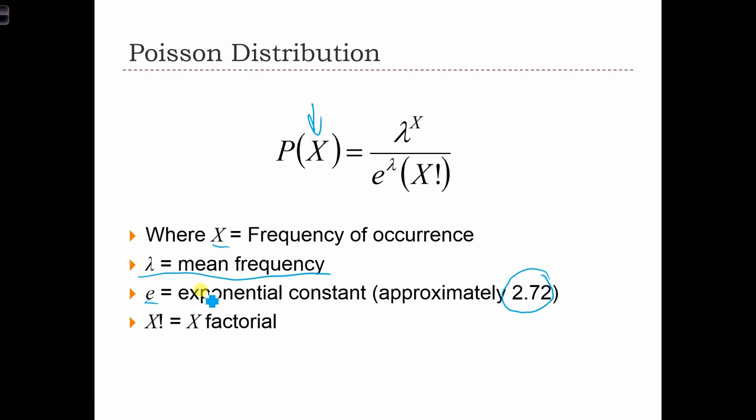And the factorial is defined in the same way. So if we have x factorial, that's just equal to x times x minus 1 times x minus 2 up until 1.